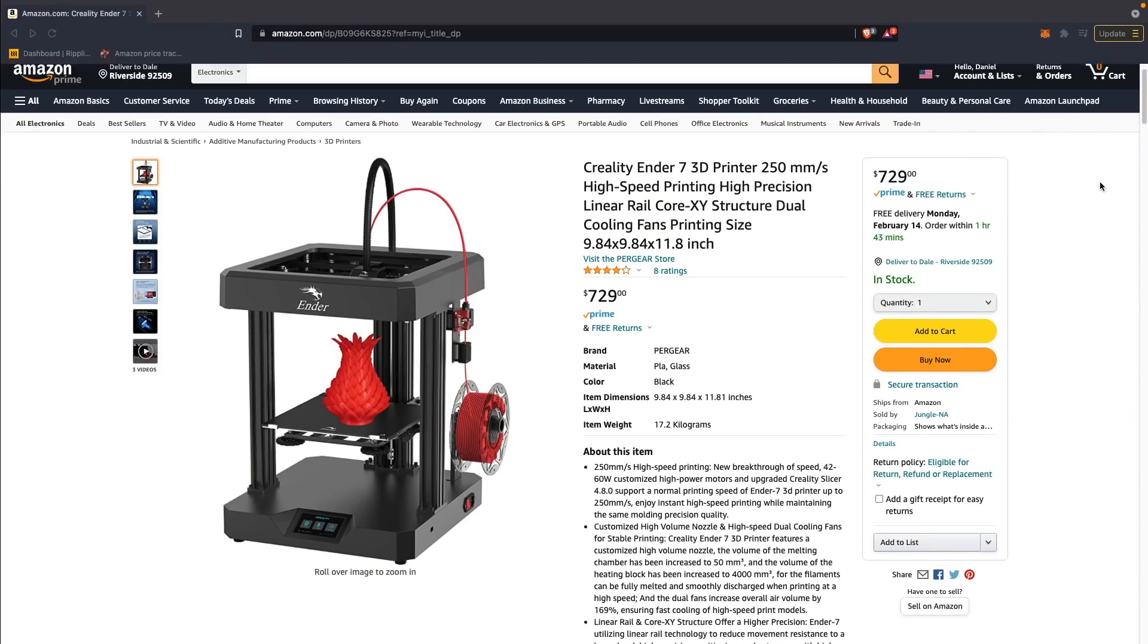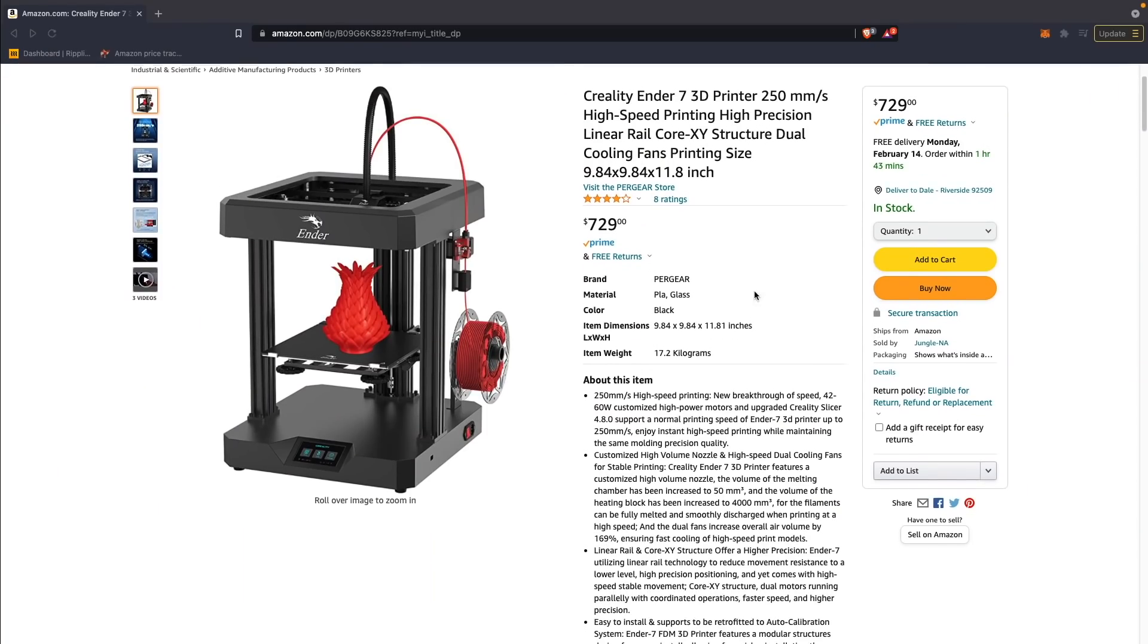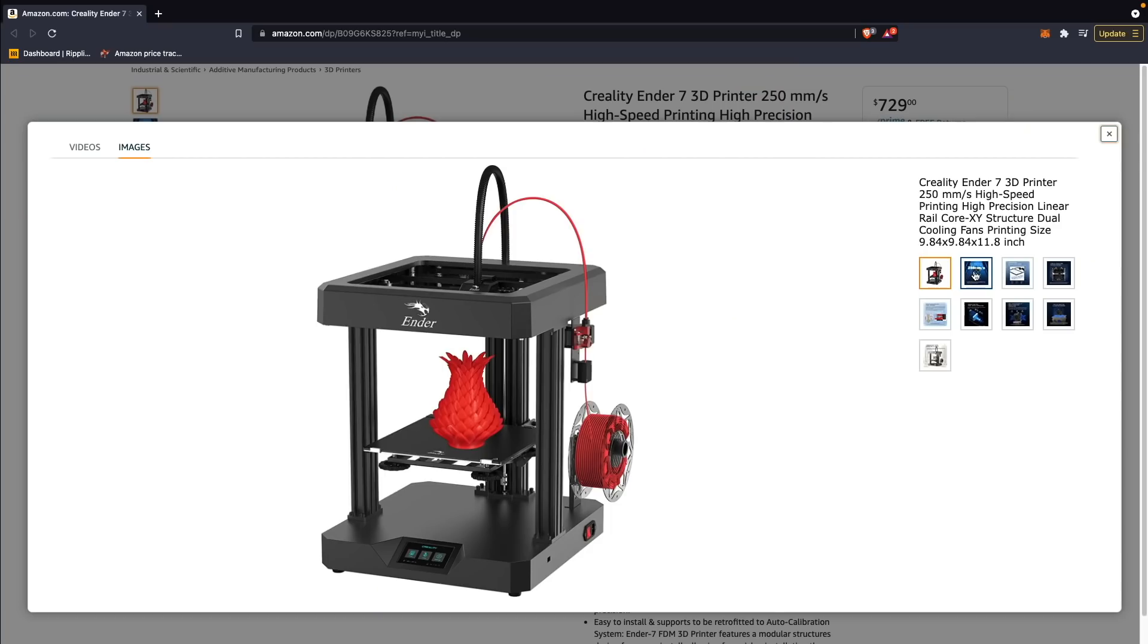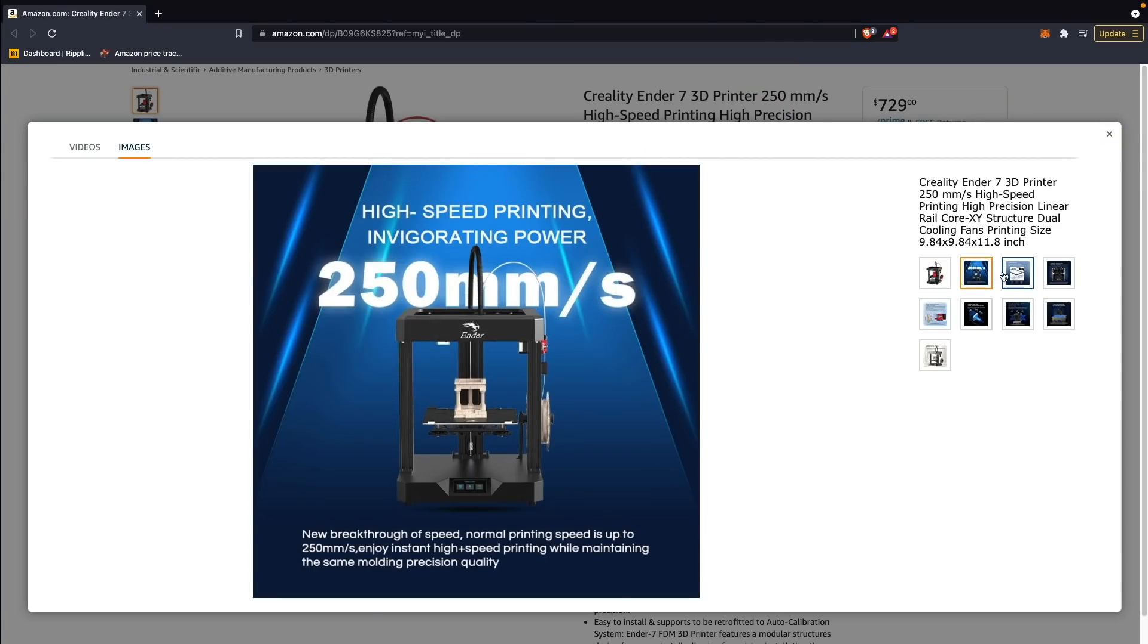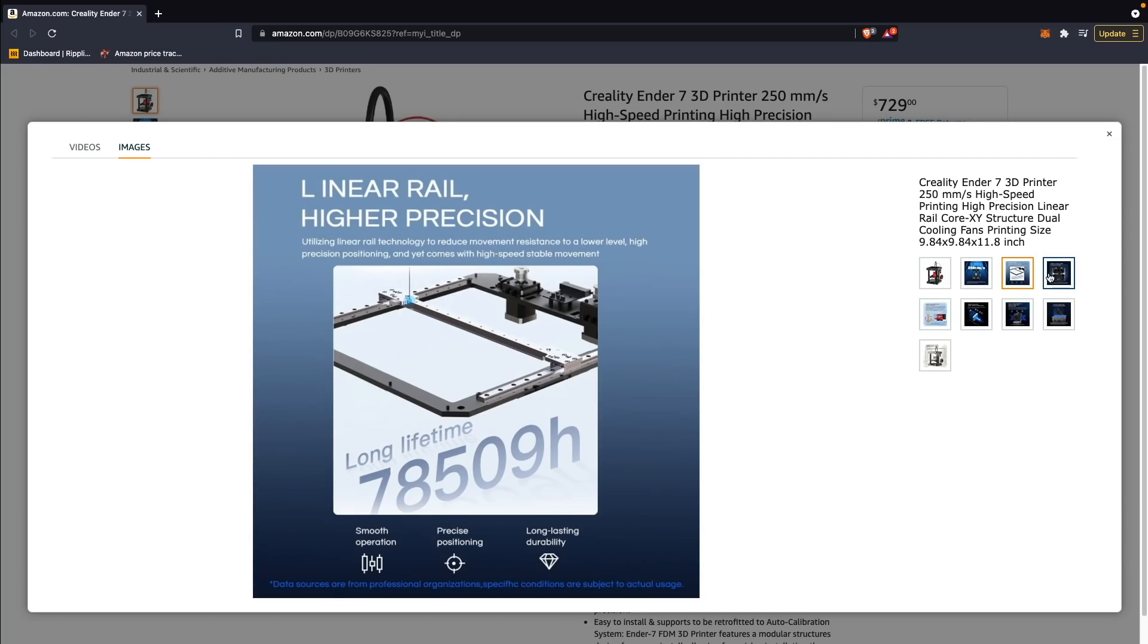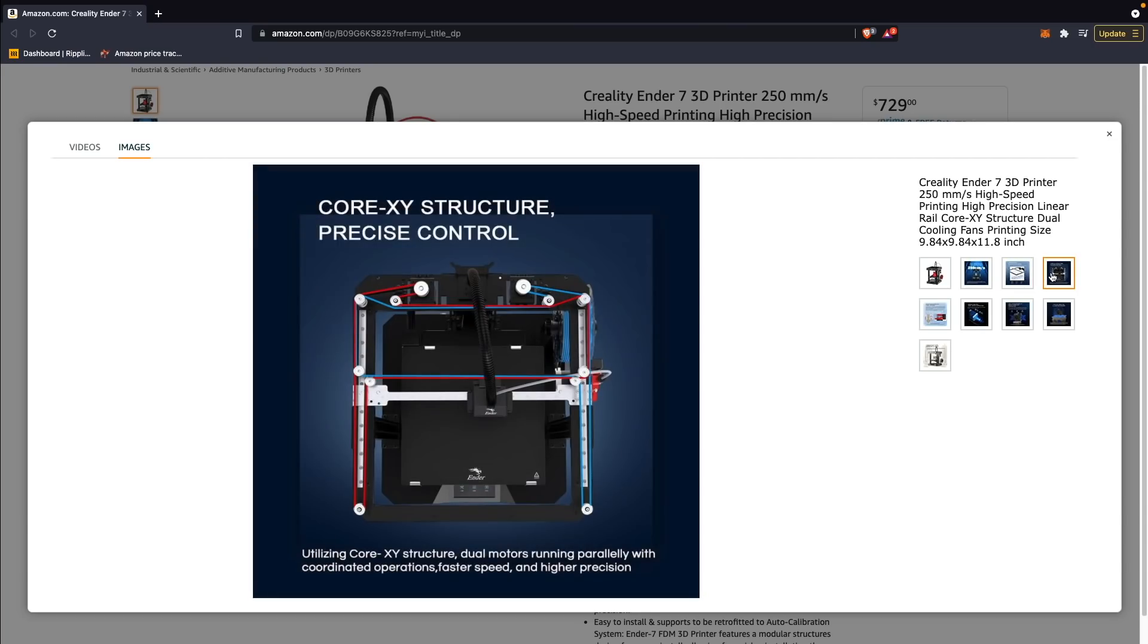It's super disappointing because the Ender 7 is a $700 3D printer, and so I was at least expecting it to be this Core XY that was going to have quality print quality on par with at least their previous generation of printers, but it just doesn't seem to be the case. It seems like the only real emphasis was speed, which is why they went with the larger belts and bulky motors and large drivers, but there was no emphasis on quality at all.